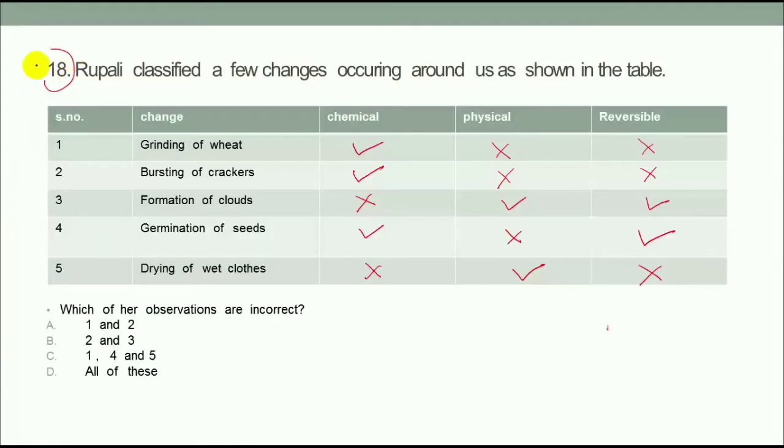This is Question 18. Rupali classified a few changes occurring around us as shown in the table. To tell you which of our observations are incorrect. Grinding of wheat. See grinding of wheat, this is not your chemical change, this is your physical change. So this is incorrect.